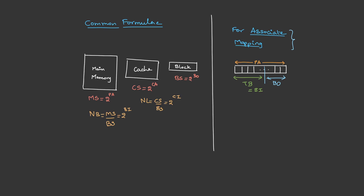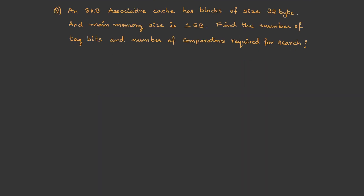Note that in GATE there are no direct questions from associative mapping specifically — most questions are from direct mapping or set-associative mapping. Let's go with one problem. The question: an 8 KB associative cache has blocks of size 32 bytes and main memory size is 1 GB. Find the number of tag bits and number of comparators required.